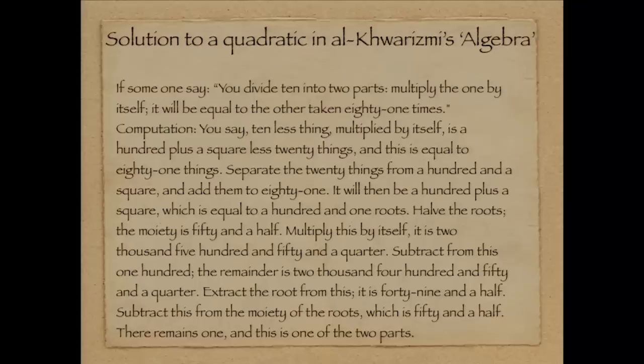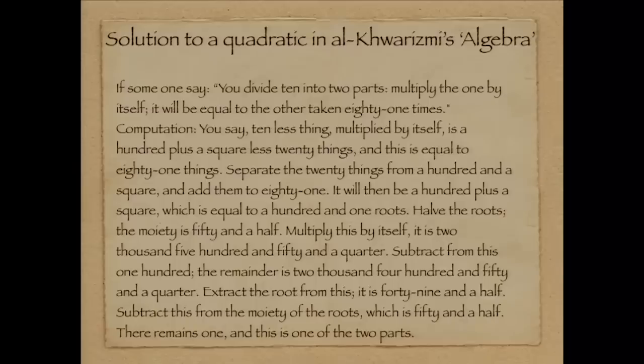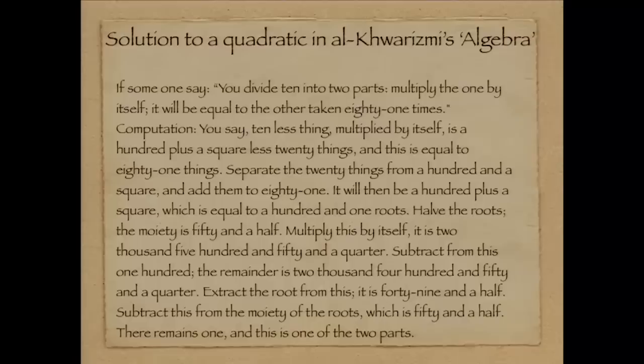If someone — say, you divide 10 into two parts, multiply the one by itself, it will be equal to the other taken 81 times. Computation: you say 10 less thing — that's going to be a 10, but it's less something, it's a diminished 10. Multiplied by itself is 100 plus a square, less 20 things. So 'less' doesn't mean you're subtracting, it means it's reduced somehow. And this is equal to 81 things.